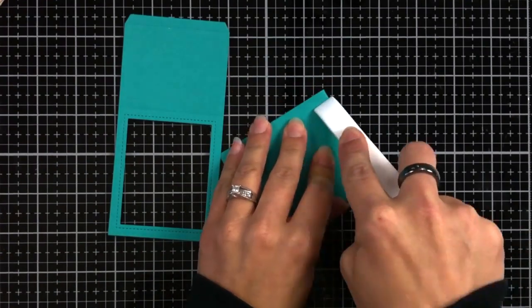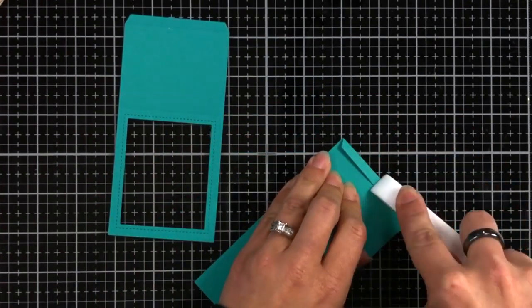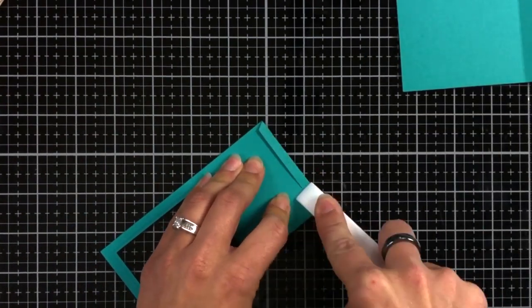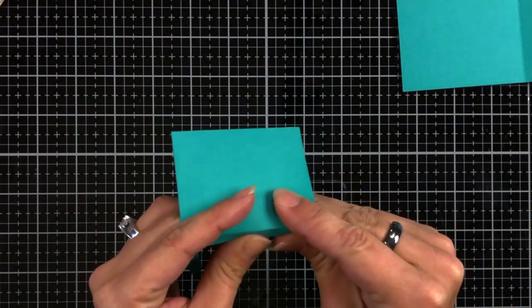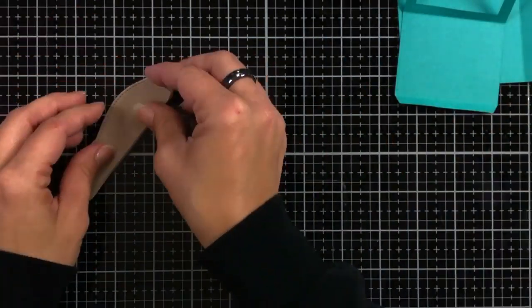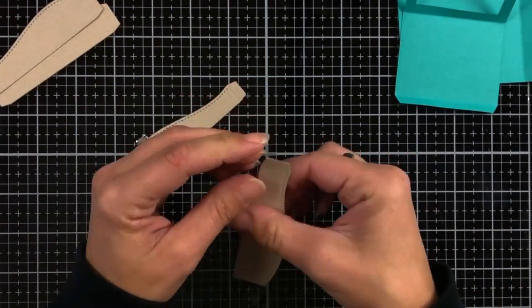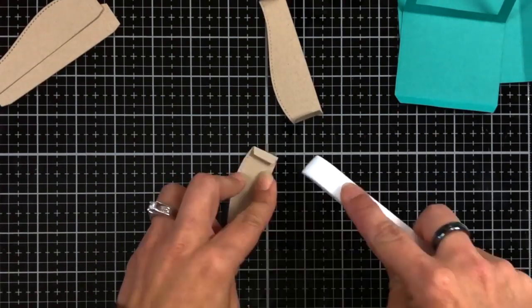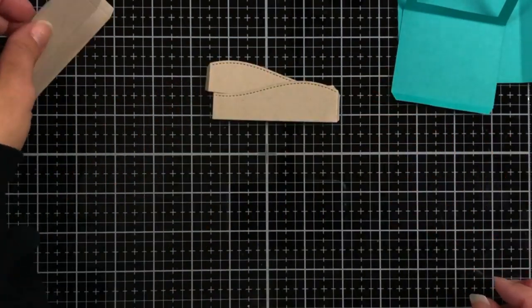So I'm just going to start working on the assembly first. I'm folding along all of those scored lines, the flaps that are going to connect together. And I'm just going to reinforce that with my bone folder. I'm also going to do that to my inserts, but only on two of them. The other two, I will actually be trimming those tabs off.